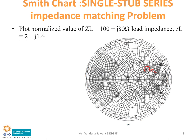First, we need to plot the point ZL on the Smith chart. If you want to plot ZL that is 200 plus J80 ohm, we can't plot it directly on the chart. We need to normalize this point by dividing it by the characteristic impedance, which is 50. So divide 200 by 50 to get 4 — wait, 100 by 50 equals 2, plus J80 by 50 equals J1.6. So 2 plus J1.6 is the point we need to plot on the chart.